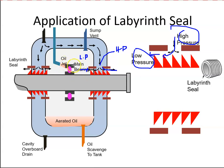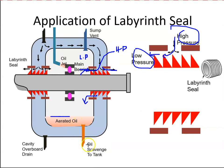The oil hits the bearing, gets warmer, and expands due to the increase in temperature. It collects at the bottom of the compartment — warm oil mixed with air that has leaked in past the labyrinth seal — creating an aerated oil whose volume can be three times the volume of the pressurized oil. So the scavenge system capacity needs to be multiple times bigger than the pressure system — roughly three times.